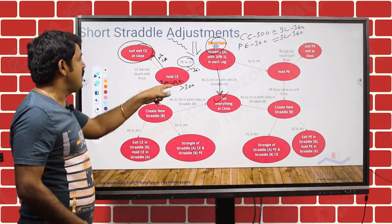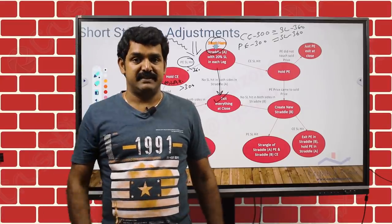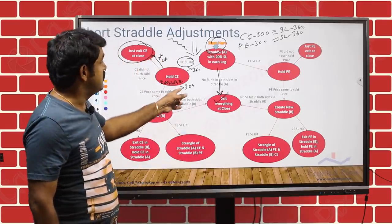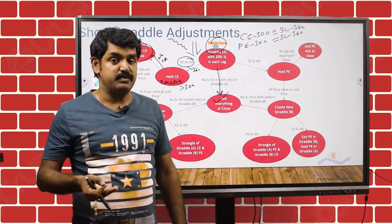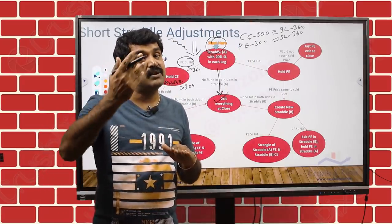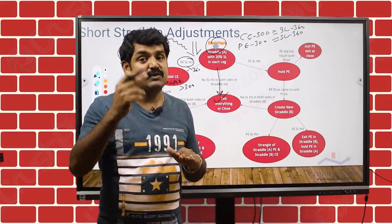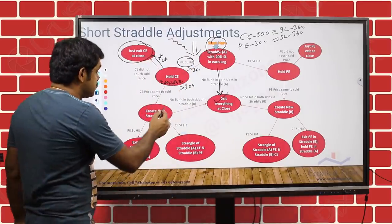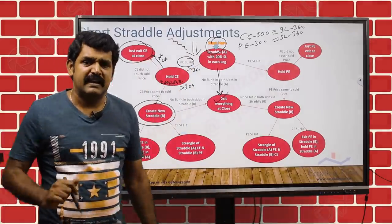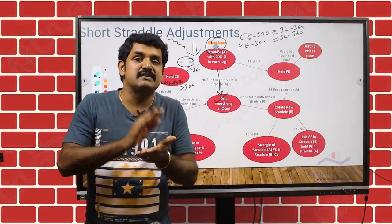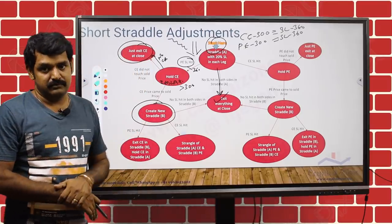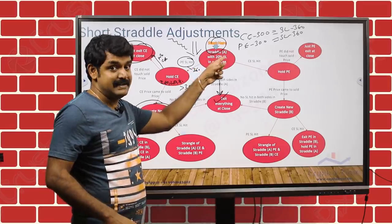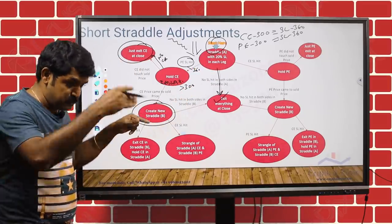But if the market has come down, hit your put stop loss, and then is reversing back, and while reversing the call premium is going back to 300 rupees again — that is threatening. Your call stop loss is also 360. Already your put stop loss was hit for 60 rupees loss; if the market reverses and then hits the call stop loss, that's another 60 rupees — so 60 plus 60 is 120 rupees total loss. In order to defend this, you create a new short straddle — Straddle B.